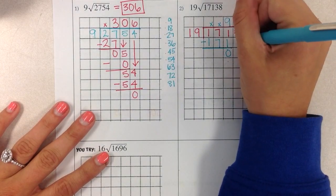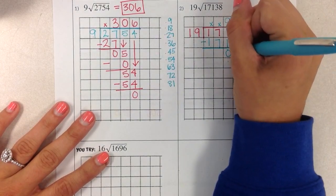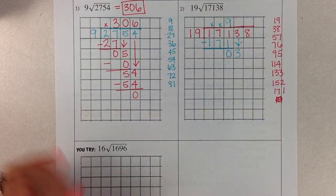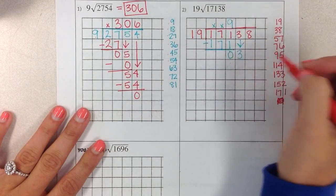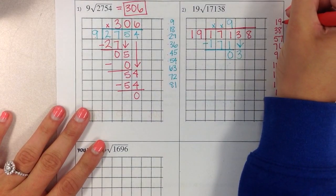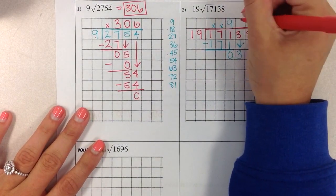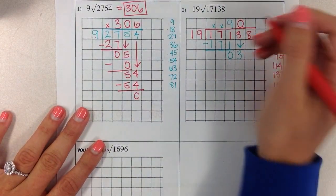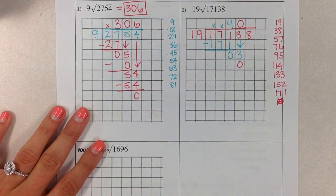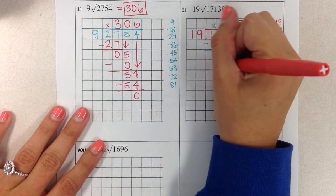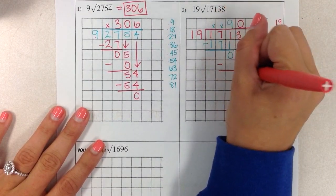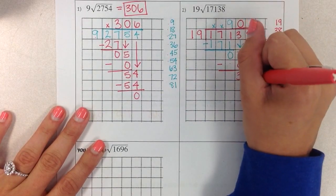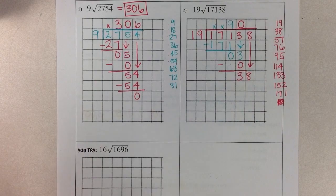Step 4 is to bring down, bring down the 3. Okay, starting all over again. 3 divided by 19, does 19 go into 3? Nope. So we don't put an x, we put a 0. It goes in zero times. 19 times 0 is 0. Step 3 is to subtract. 3 minus 0 is 3. Step 4 is to bring down, bring down the 8.